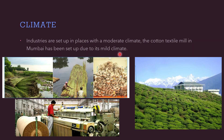Industries are set up in places where the climate is moderate. For example, the cotton textile mill in Mumbai has been set up due to the mild climate, and tea plants are situated where tea gardens are, normally in mountainous regions. It is better to locate an industry where temperatures are moderate so that people can work comfortably. In very cold or very hot places it is difficult to work, and most people abstain from setting up industries in areas where the climate is extreme.